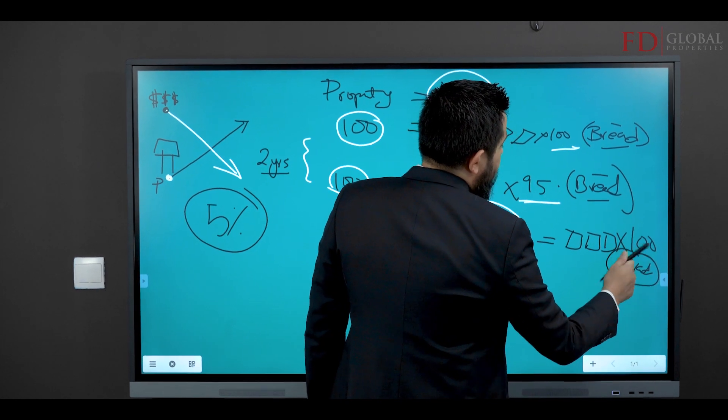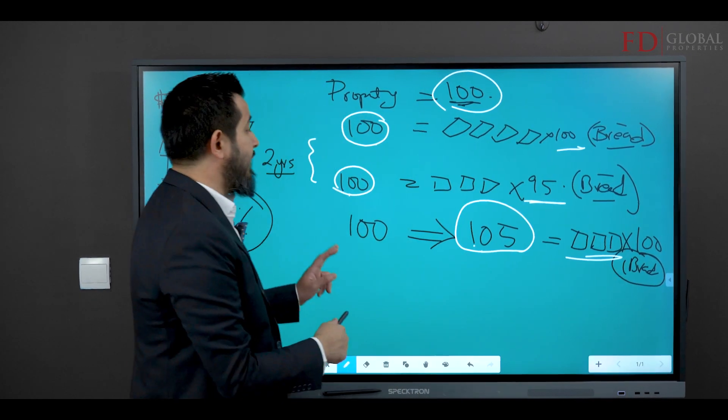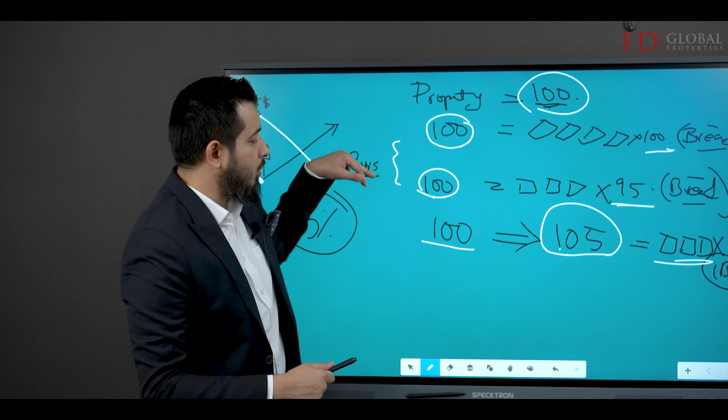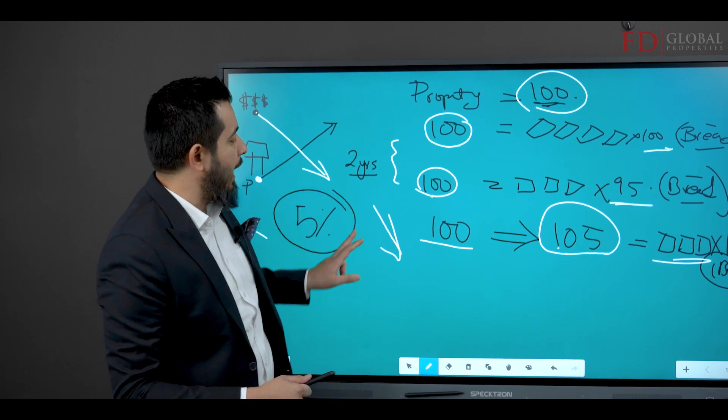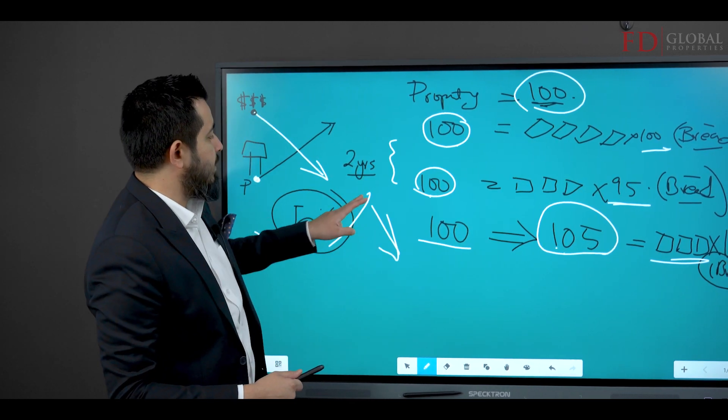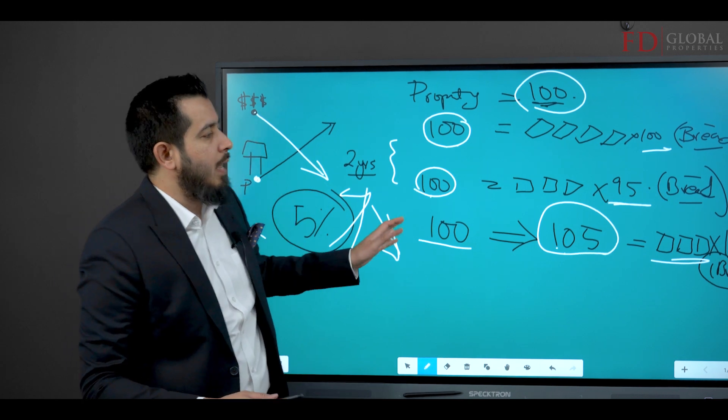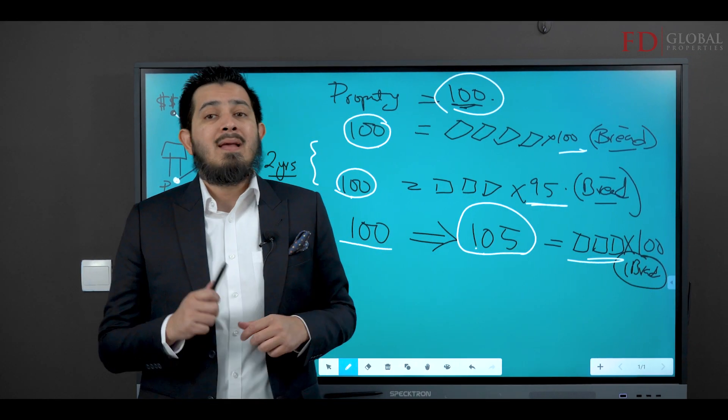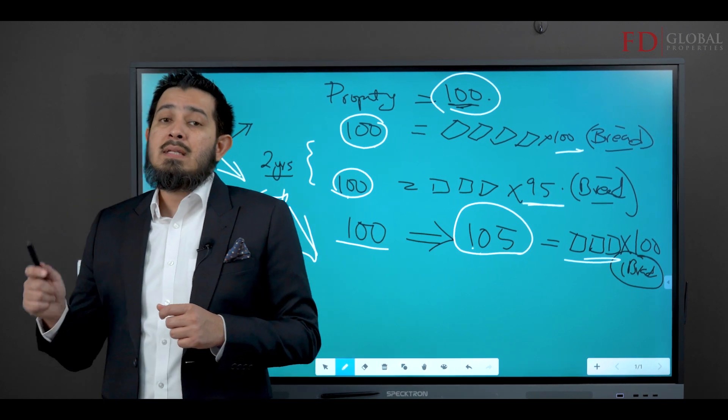Which is good because at least your value - at least your cash did not go down, right? Because your house went up five percent in value, so now you can still go and buy a hundred loaves of bread. But the deal is...